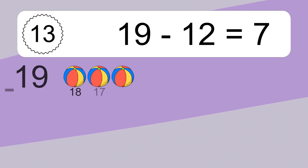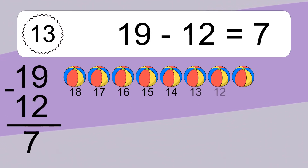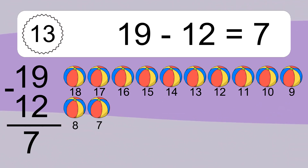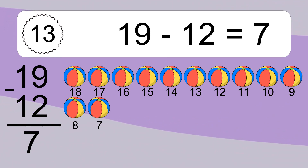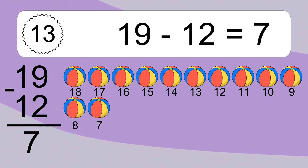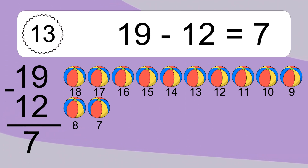19 minus 12 equals what? 19 minus 12 equals 7. Let's count it: 18, 17, 16, 15, 14, 13, 12, 11, 10, 9, 8, 7.